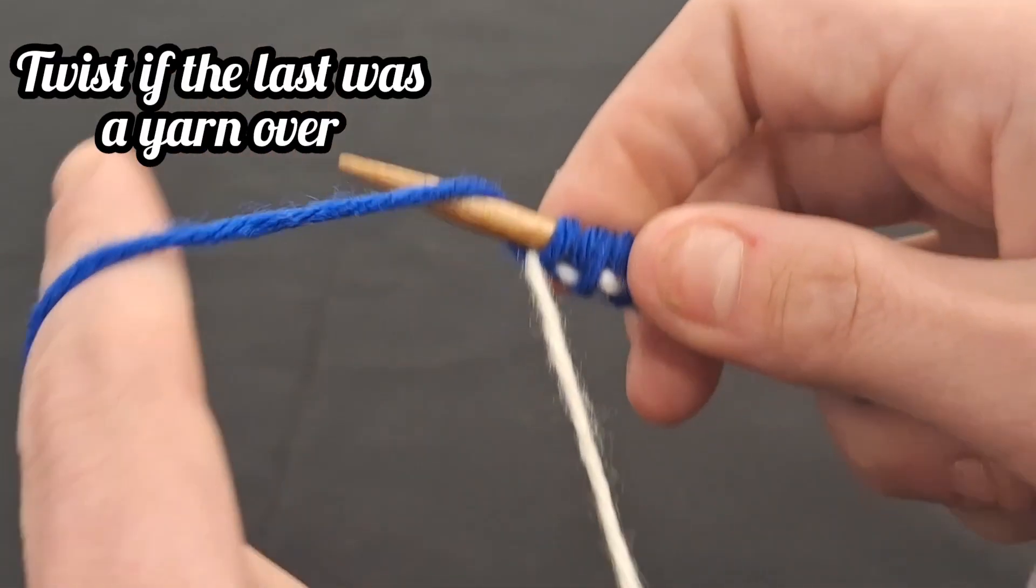Once you've cast on your stitches, begin knitting your project's first row of stitches as intended, using your main yarn, until you reach the slipknot we created at the beginning. You will simply just slide this slipknot off and proceed knitting until you achieve a length you want.